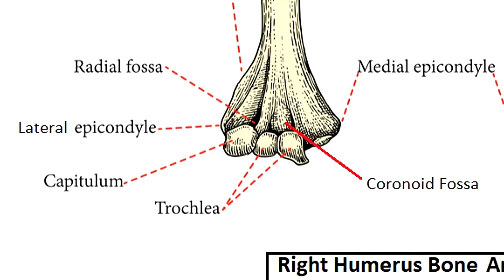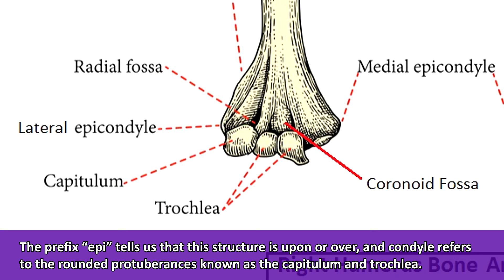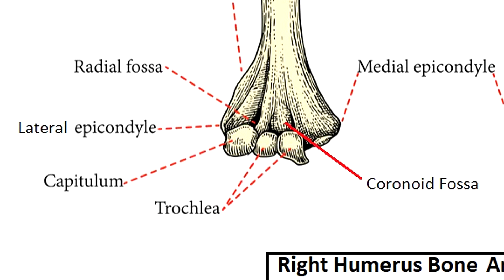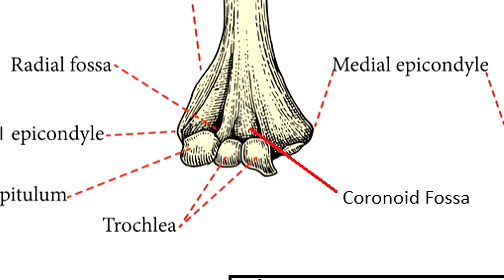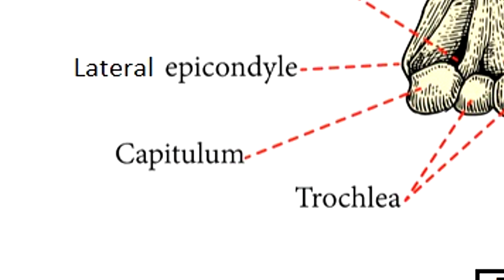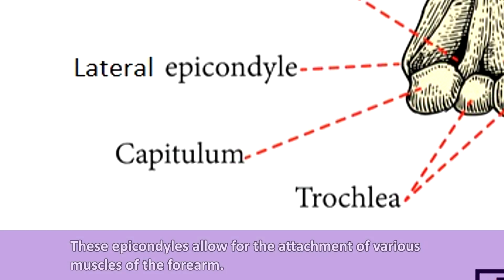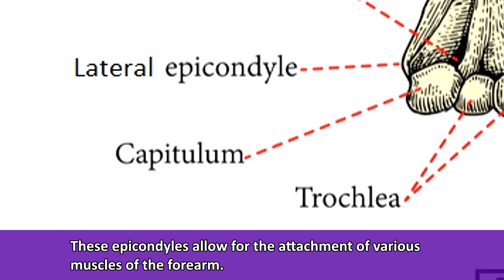Toward the distal end of the humerus, it fans out into left and right knobby structures called the epicondyles. The prefix epi tells us that these structures are upon or over the condyles. The medial epicondyle is toward the midline of the body, just over the trochlea. The lateral epicondyle is located toward the side of the body, just over the capitulum. These structures allow for the attachment of various muscles of the forearm.